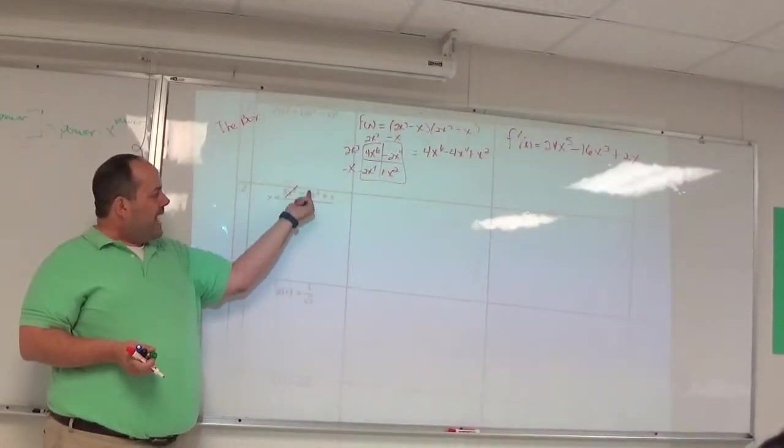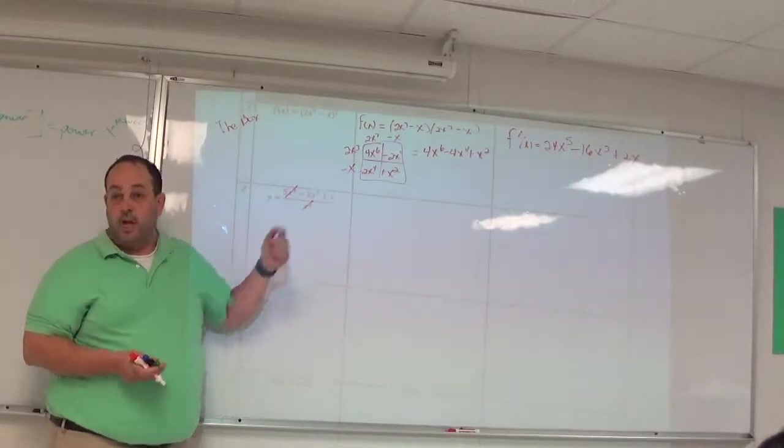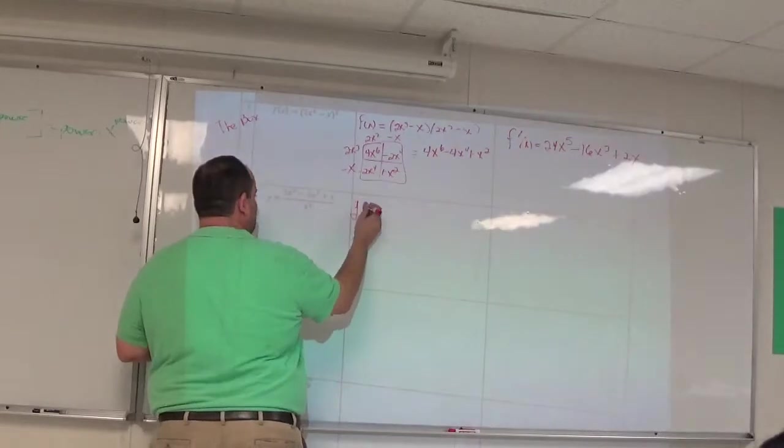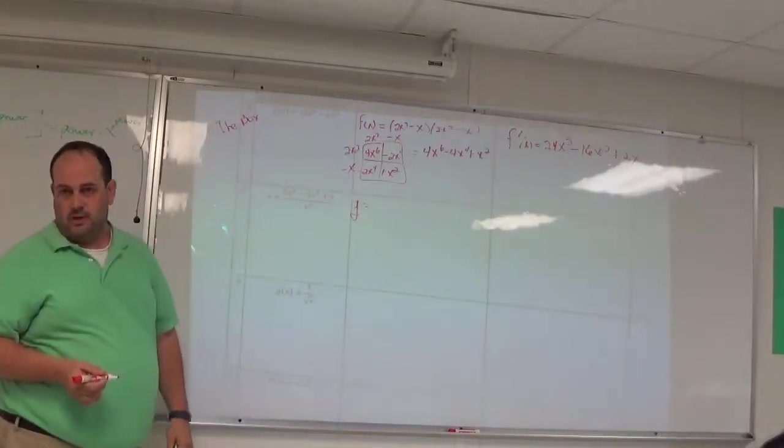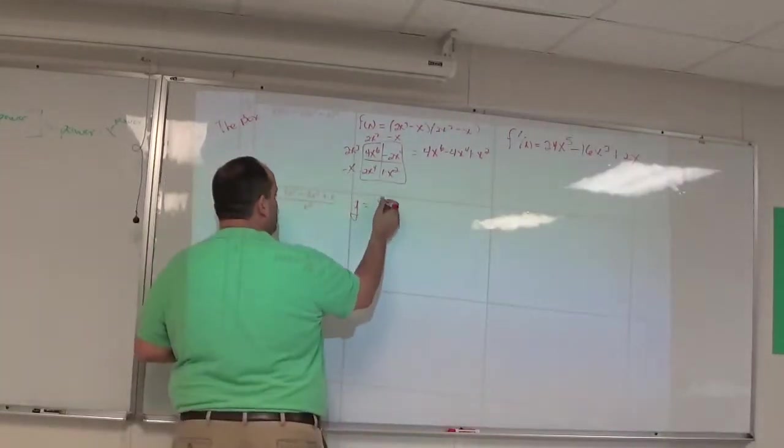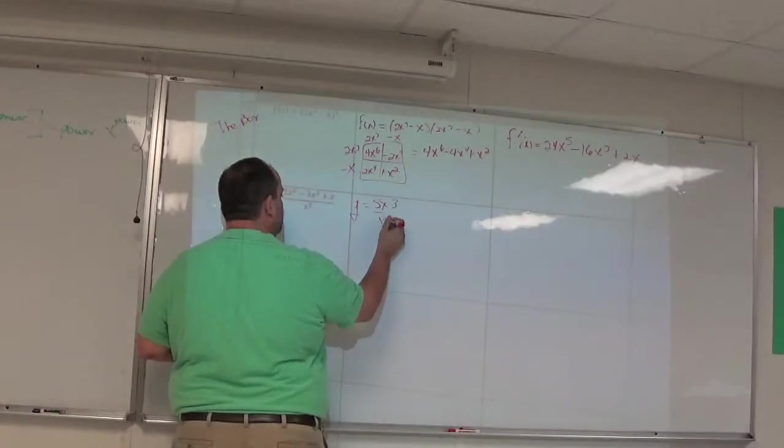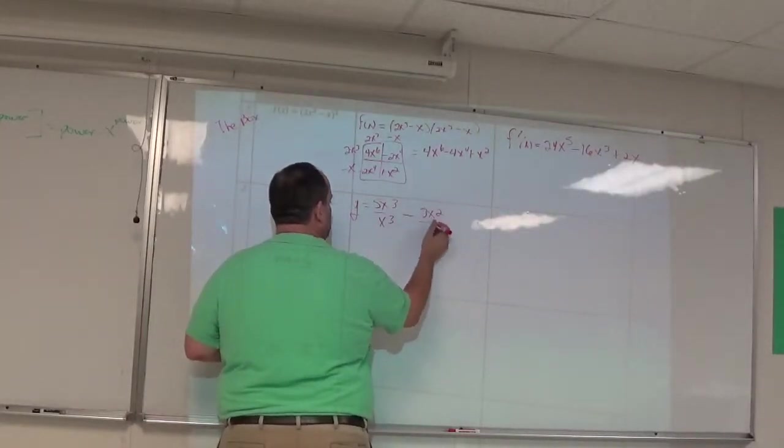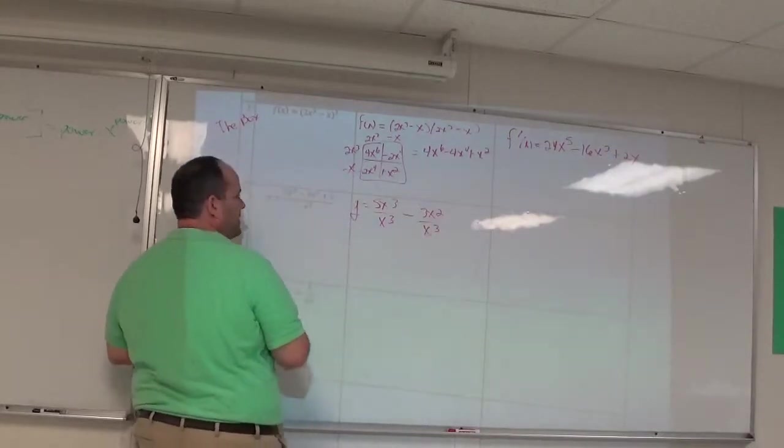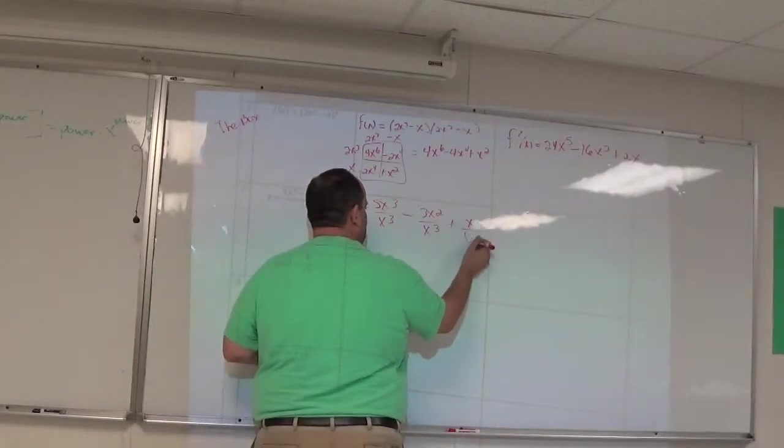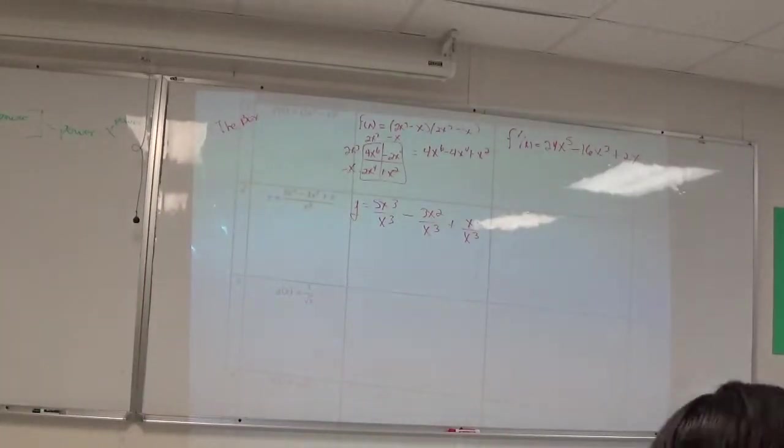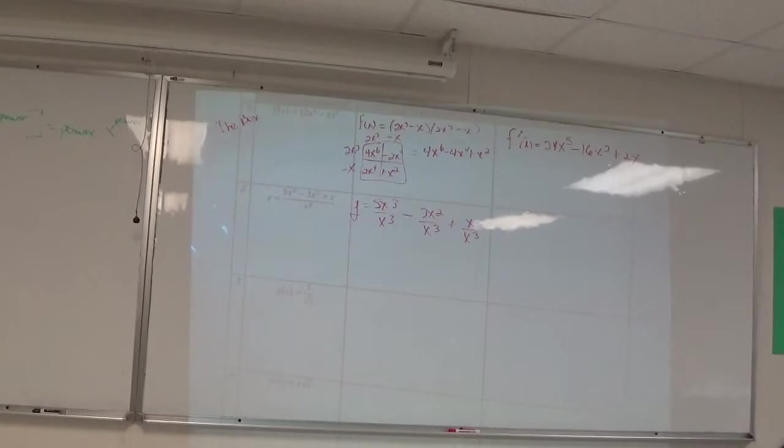The problem is that x cubed has to divide all three terms. So one thing you could do is let it divide all three terms. Meaning, how about writing this as 5x³ divided by x³ minus 3x² divided by x³ plus x divided by x³. Is that legal? Yes. Good. Why is it better?